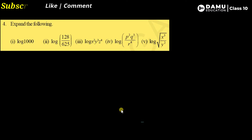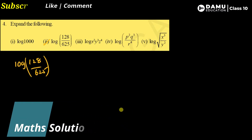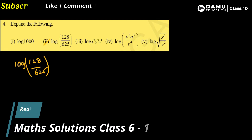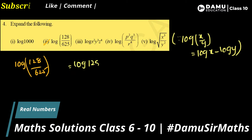Let's move on to the second one: log(128/625). The formula for log(x/y) is log x − log y, so this becomes log 128 − log 625.